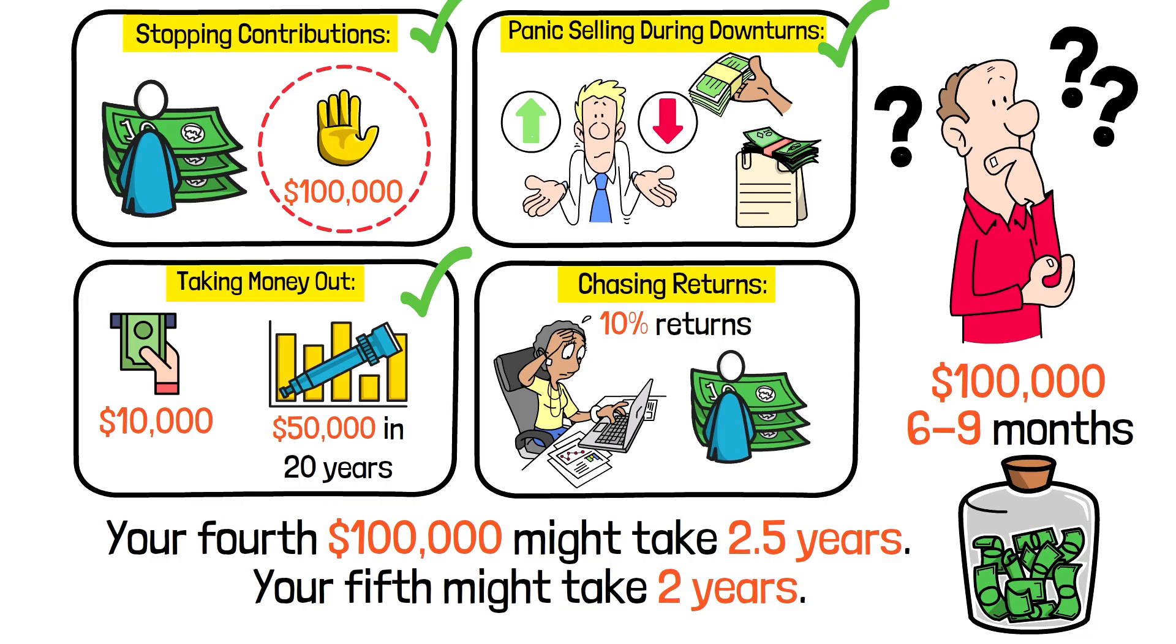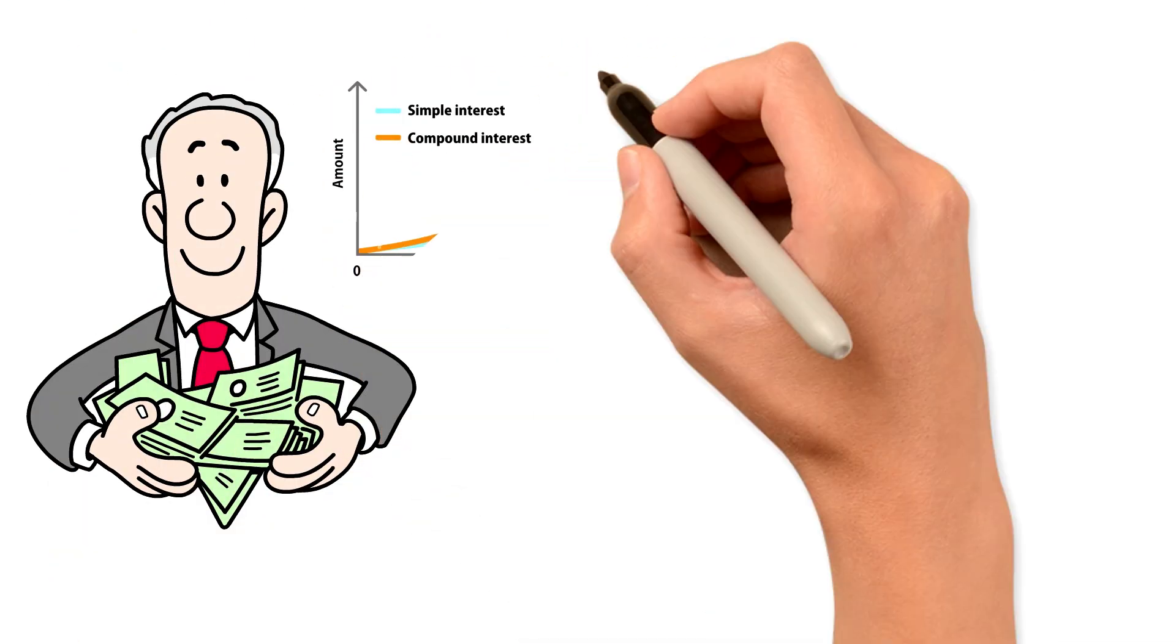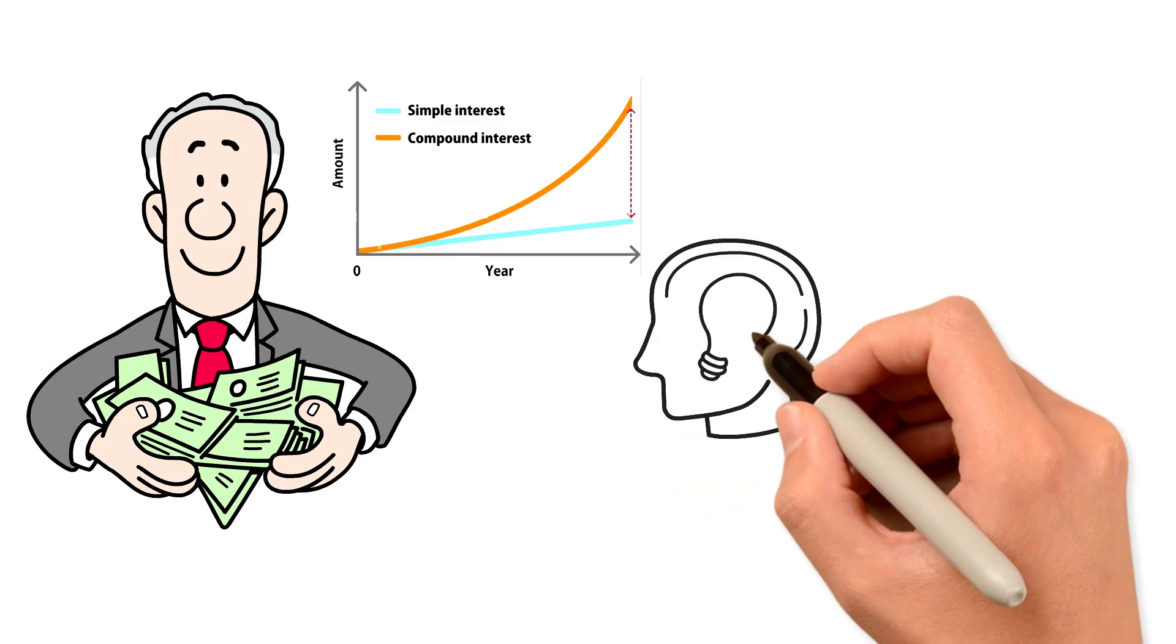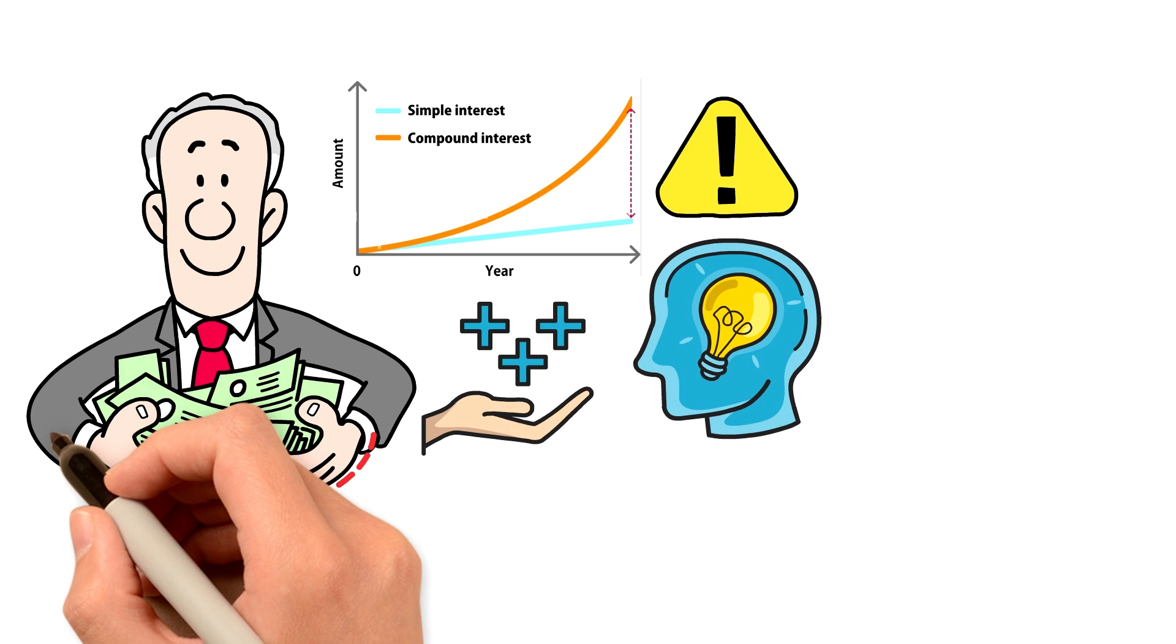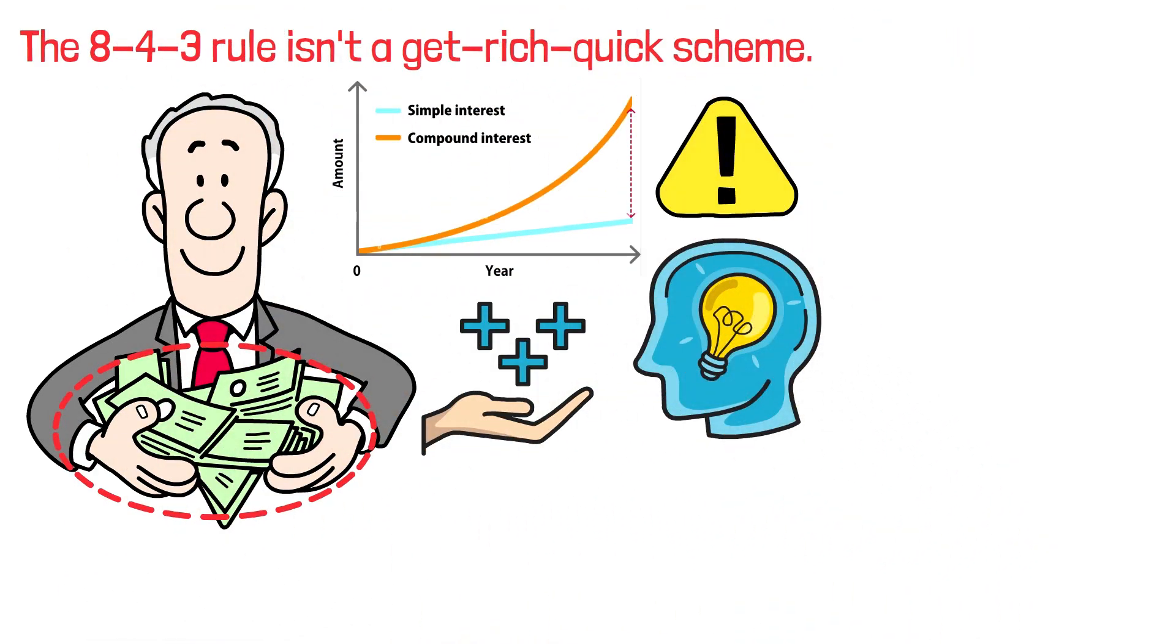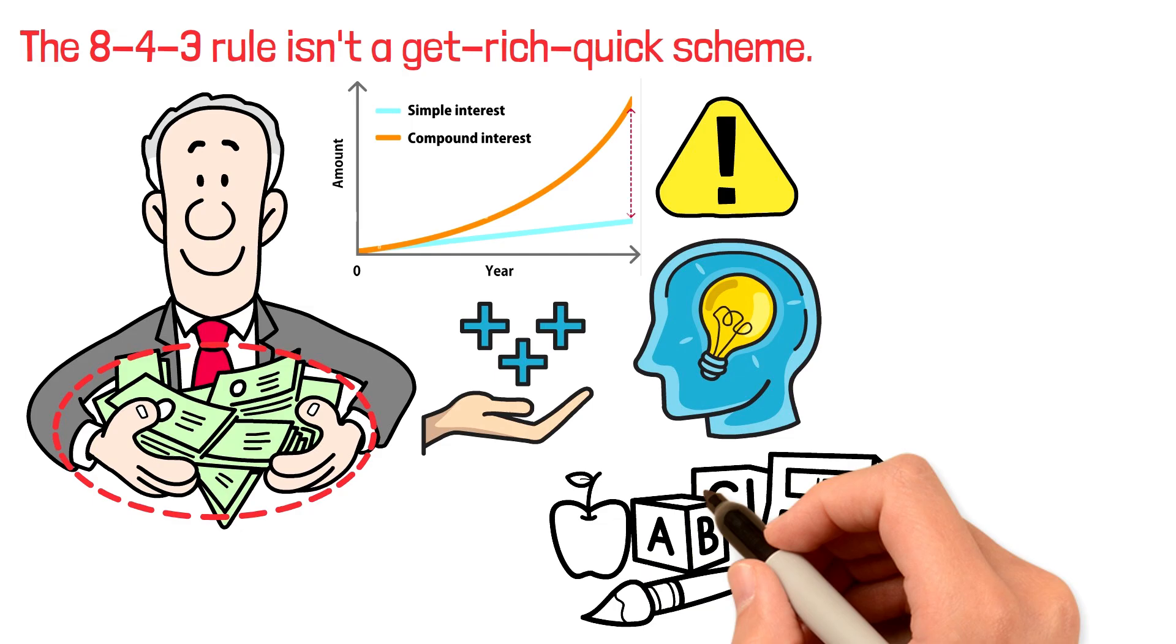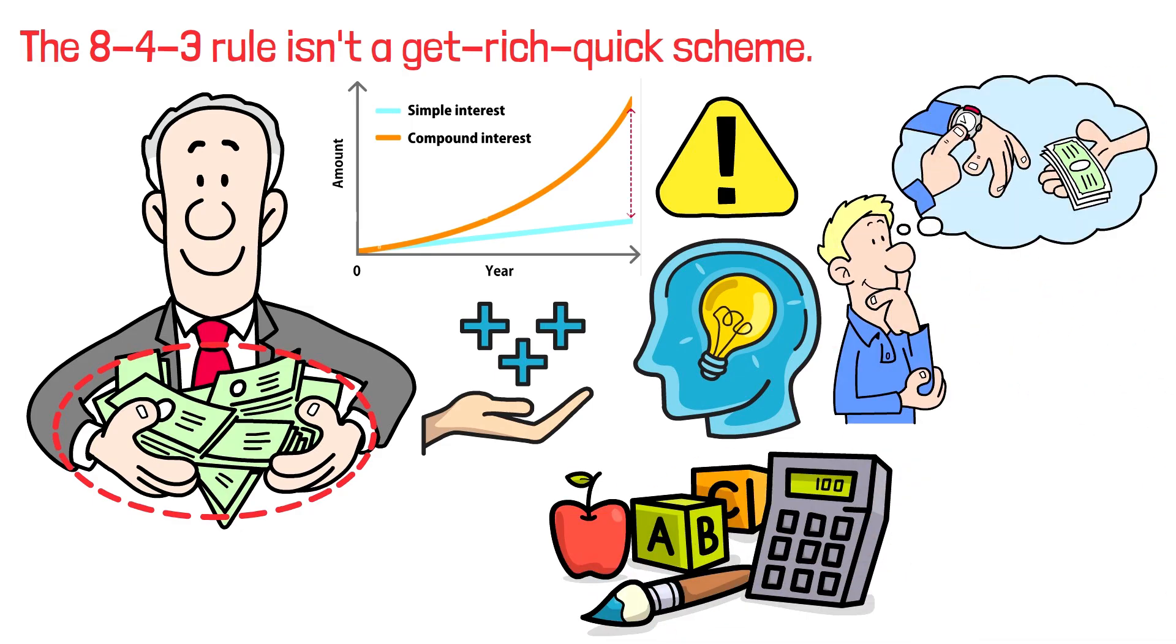This is why wealthy people seem to get richer, faster. They're further along the compound interest curve. They're not necessarily making better decisions or taking bigger risks. They're just benefiting from having a larger base of capital that's compounding. The 8-4-3 rule isn't a get-rich-quick scheme. It's simply the mathematical reality of how compound interest works when you invest consistently over time.